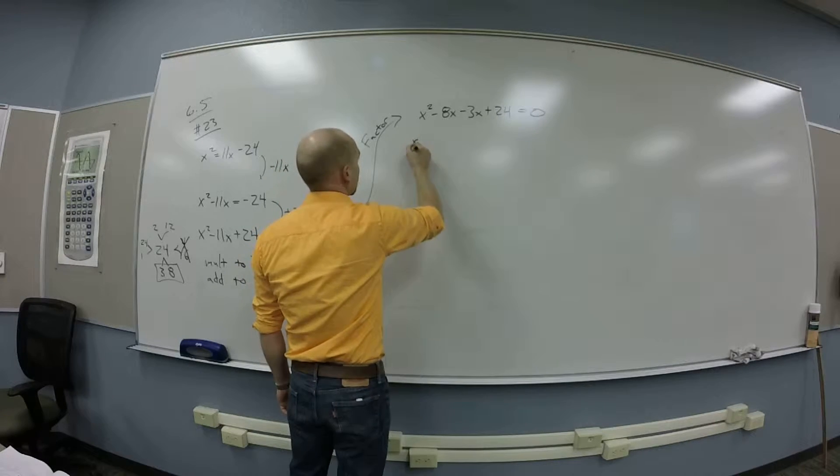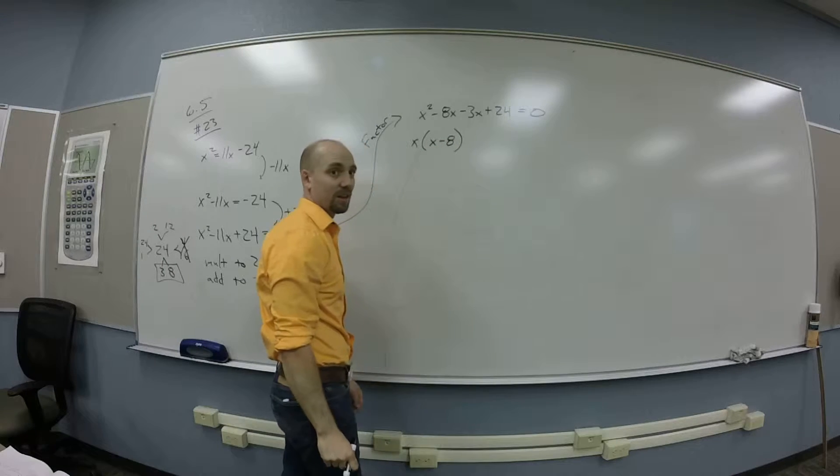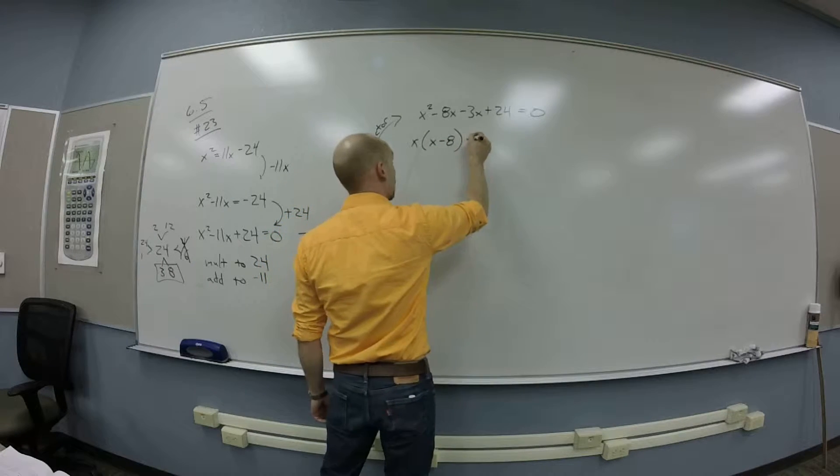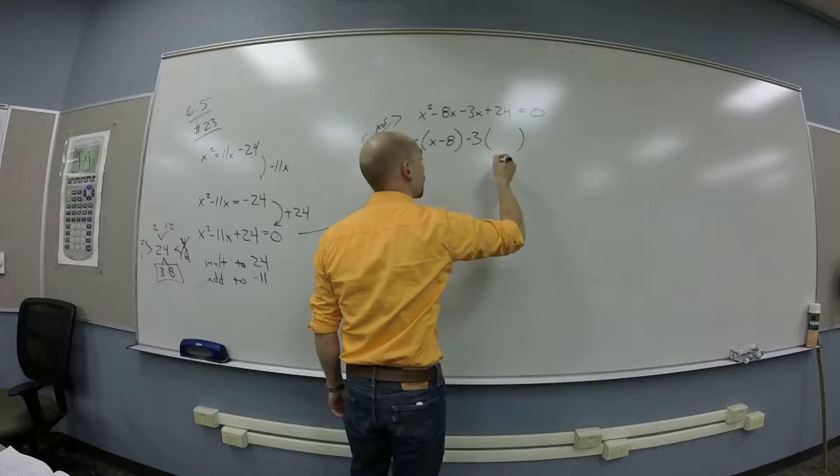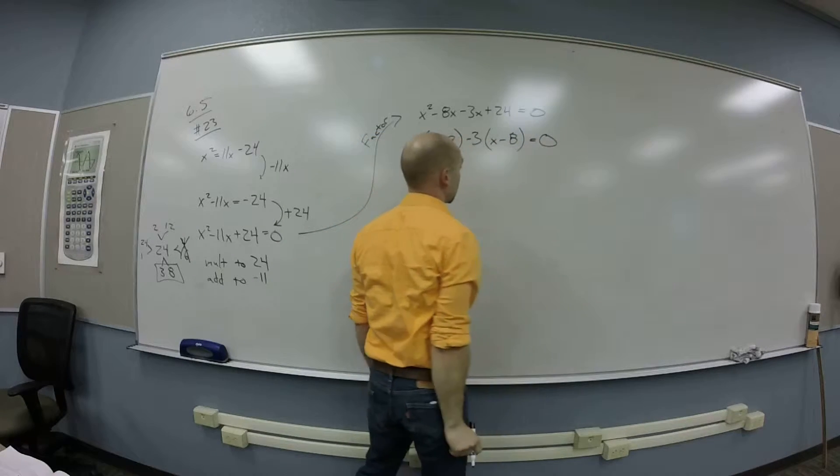And then you get x minus 8. Okay, so there's an x times x minus 8. And then on the other guy, what can I factor out of that? Negative 3. Okay, negative 3. So then I'm left with x minus 8. X minus 8. And this is equal to zero, all right.